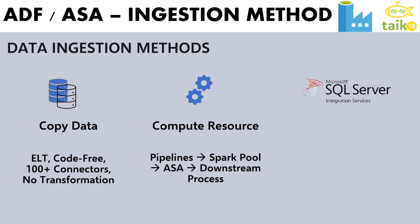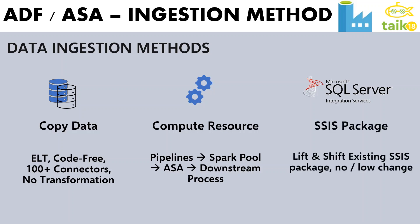The third method is SQL Server Integration Services, which is the SSIS package. If you have existing SSIS packages running on your on-premises server, you can directly lift and shift those packages with minimal or no changes, and then run them in Azure Data Factory itself. Note that this third option — SSIS package — is not available in Azure Synapse Pipelines; it is only available in Azure Data Factory.